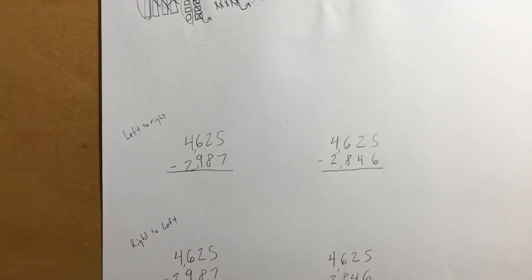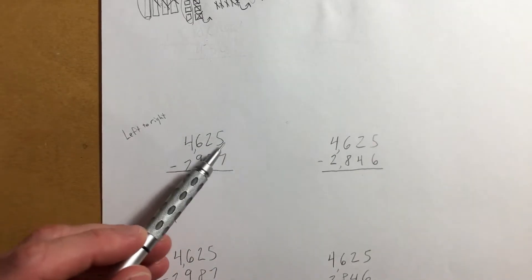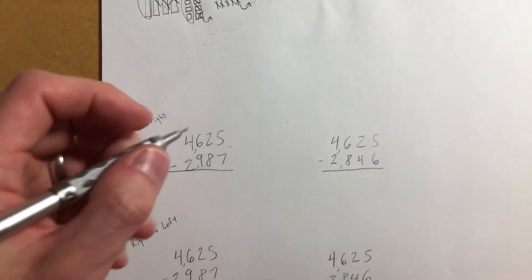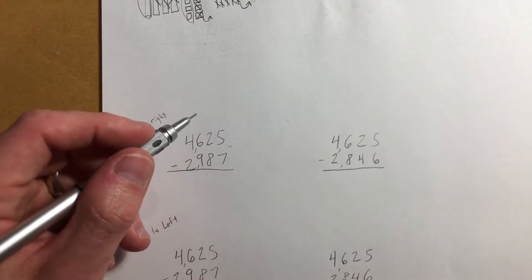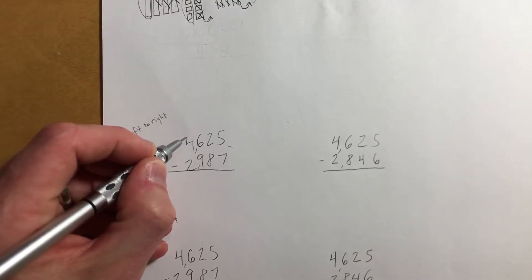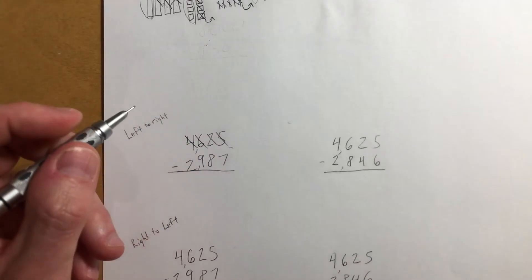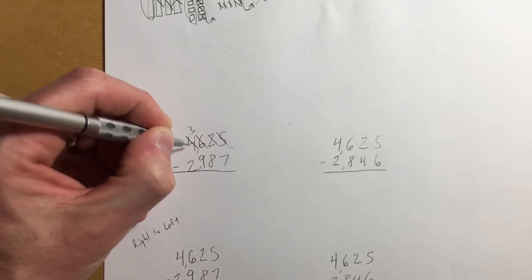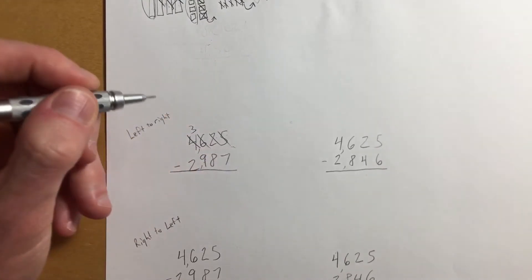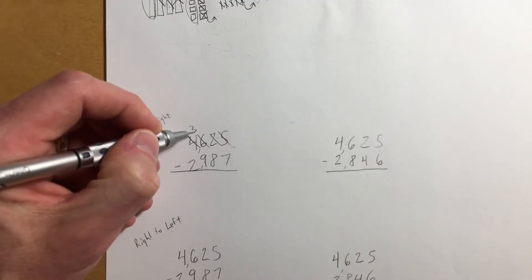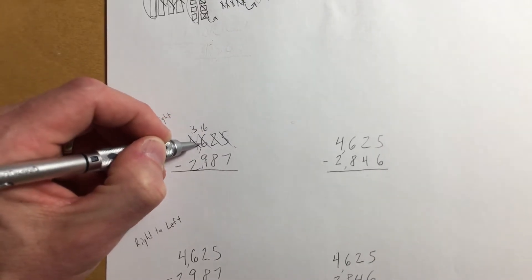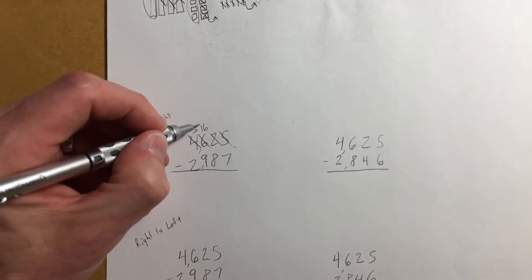Moving on to another way that might be slightly confusing — this is ungrouping from left to right, something that a lot of people don't really do, but we're going to do it anyway and see if you like it. If you like it, awesome — you can do your math this way. Once again, we're going to start by crossing all of these out, and now I've got to do a little bit of unbundling all the way across, because these numbers are all bigger than my numbers up here. I'm going to move my thousand over here, which gives me sixteen hundreds.